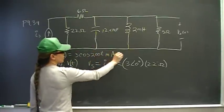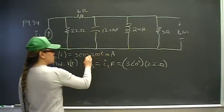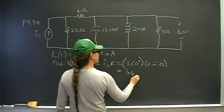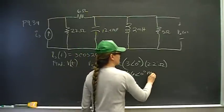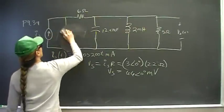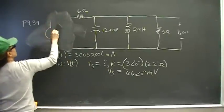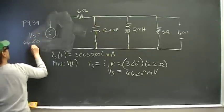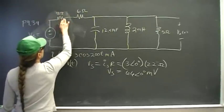But no angle means zero, angle is zero. So this becomes 66 angle zero Vs, and 66 angle zero millivolts. Okay, so I will replace this with my source transformation. So this then becomes Vs is equal to 66 angle zero millivolts, 22 in series with 6 to become 28.